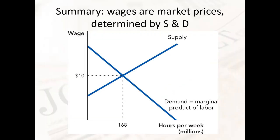To summarize: wages are determined by supply and demand for labor — supply being how willing people are overall to put in extra hours of work for more money, and demand being how productive extra workers are at the margin. Where supply and demand meet, we have an equilibrium wage and an equilibrium quantity. The only thing that will drive this wage up or down is shifts in the supply curve or the demand curve.